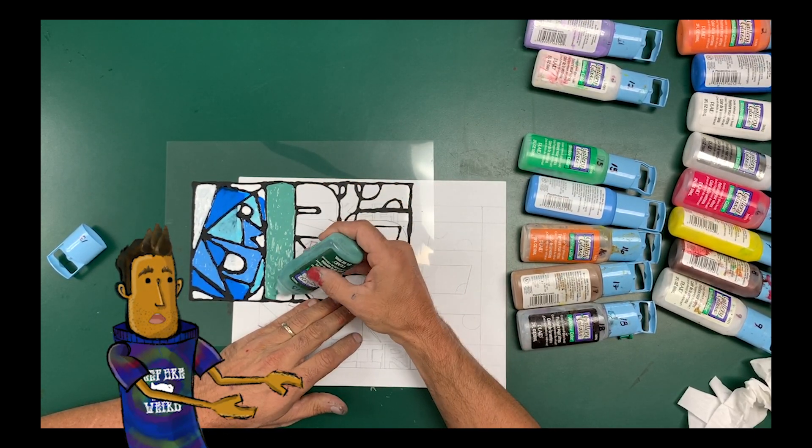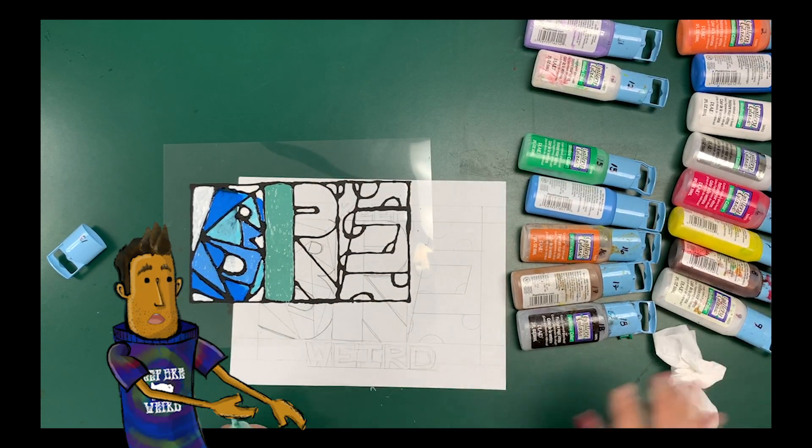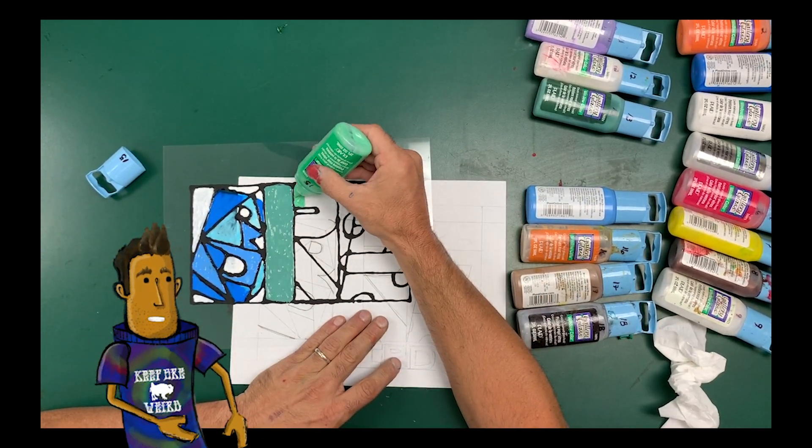You want to make sure that you don't have any empty spots inside of your colors. Because when it dries, you can actually see through it. It's amazing, but you don't want these holes where there's no color.